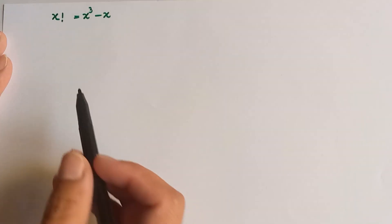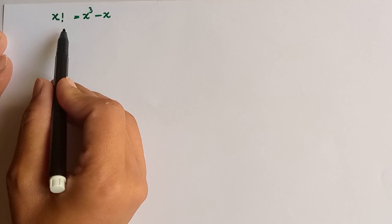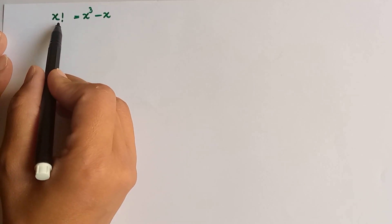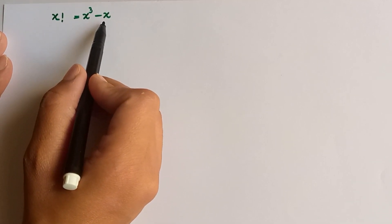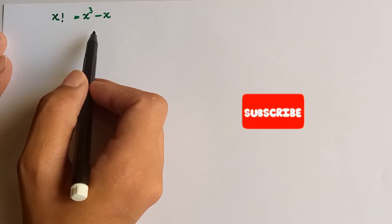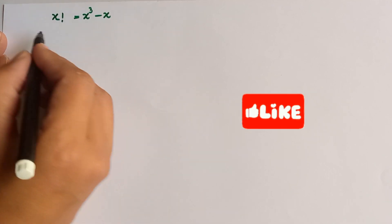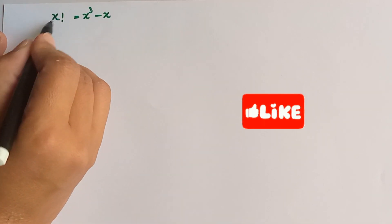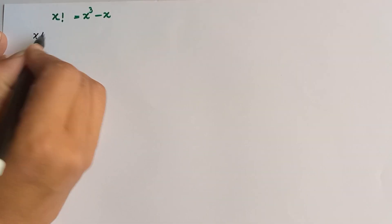Welcome, hope you are doing well. We have to solve for x in this question where x factorial is equal to x cubed minus x. Let's get started and see its solution. Let's rewrite x factorial.